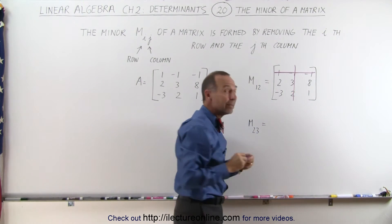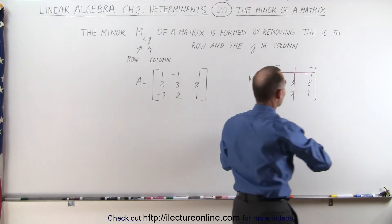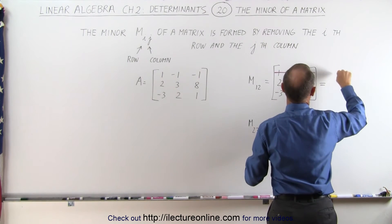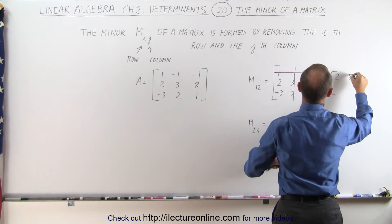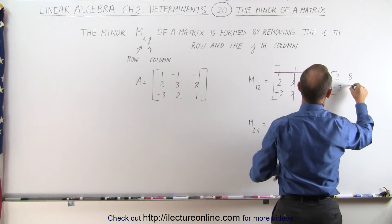And what's left is going to be the minor, which means that this can be written as a two by two matrix which has the elements 2 and 8, and -3 and 1.